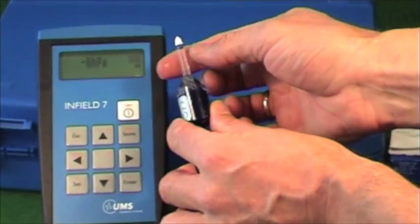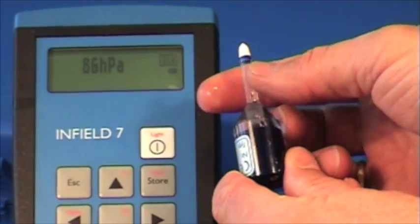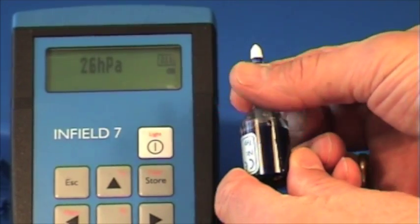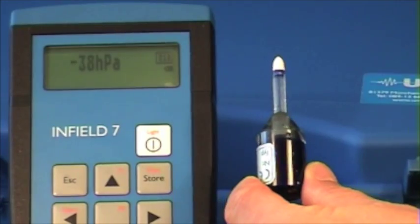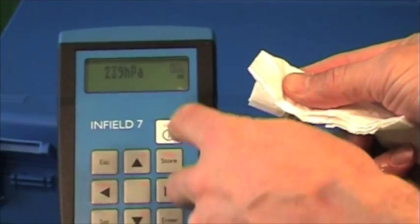Continuously check the pressure with the Infield 7. The pressure must not exceed one bar. You will clearly notice the point when the shaft hits the O-ring inside the sensor body. From this point turn slowly and only another quarter turn.